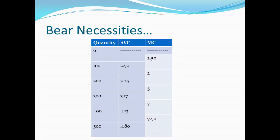Let's narrow it down to just the bare necessities of what we need to figure out how much a price taker is going to produce. All we really need are a list of the quantities that are possible, the average variable cost curve, and the marginal cost curve. The average variable cost allows us to check the shutdown point, and the marginal cost allows us to figure out how much you're going to produce using the output rule.